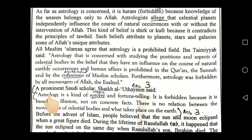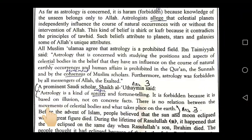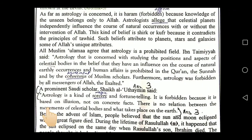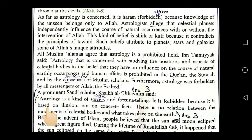Astrology was furthermore forbidden by all the messengers of Allah. There are more than one hundred thousand prophets and not one encouraged this type of knowledge. A prominent Saudi scholar, Sheikh al-Tamin, said astrology is a kind of sorcery and fortune telling. It is forbidden because it is based on illusion, not on concrete fact — it depends on imagination and not on facts and figures.